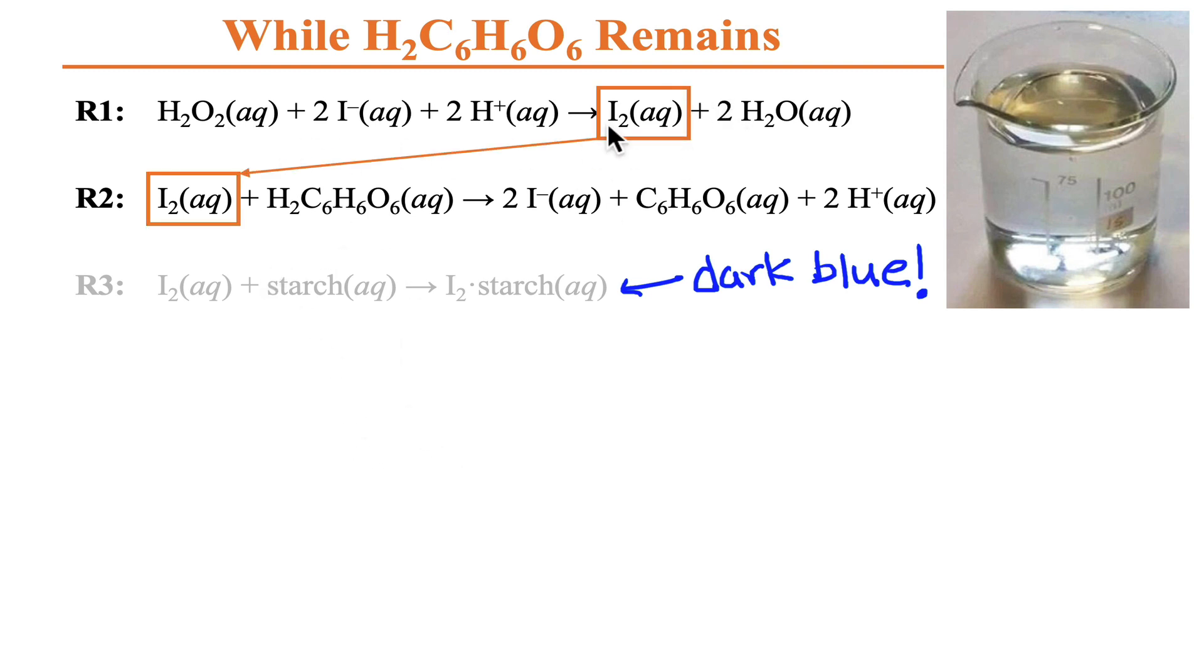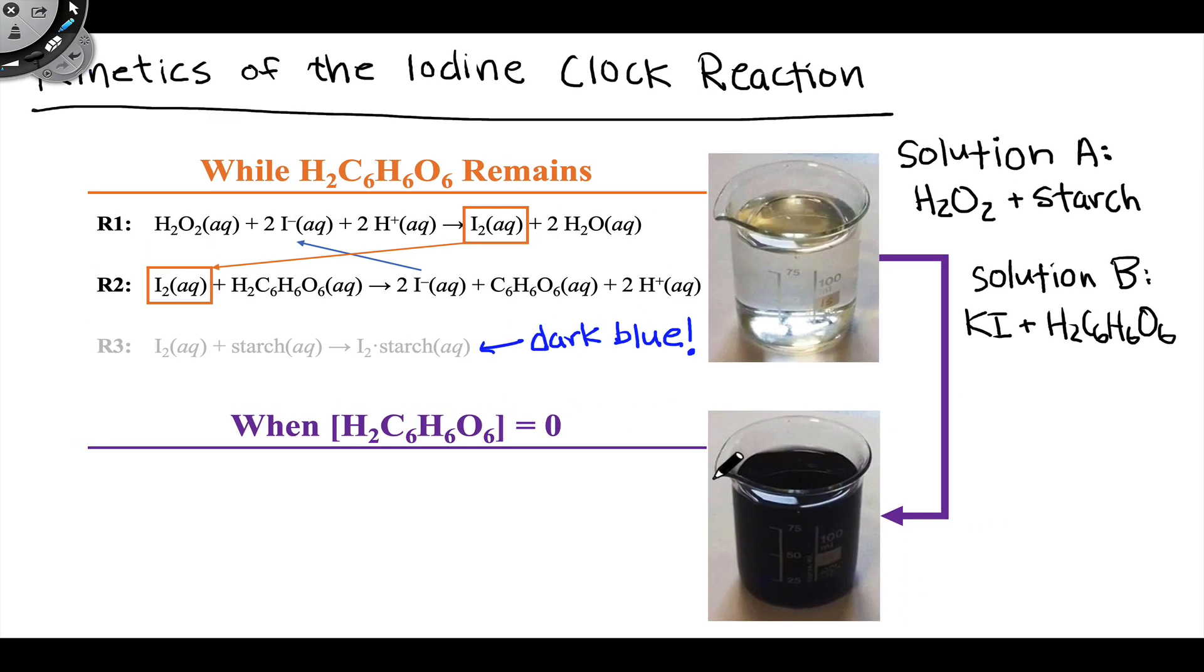So the I2 that is generated by R1 is very rapidly consumed by the ascorbic acid to form I- and that I- can cycle back and react with more H2O2. The way we're going to set up the concentrations, there will be much more H2O2 and I- than ascorbic acid in solution. So we'll reach a point because ascorbic acid is the limiting reagent, we will reach a point where ascorbic acid runs out. And at that point, we will observe the dramatic dark blue color of the starch-iodine complex.